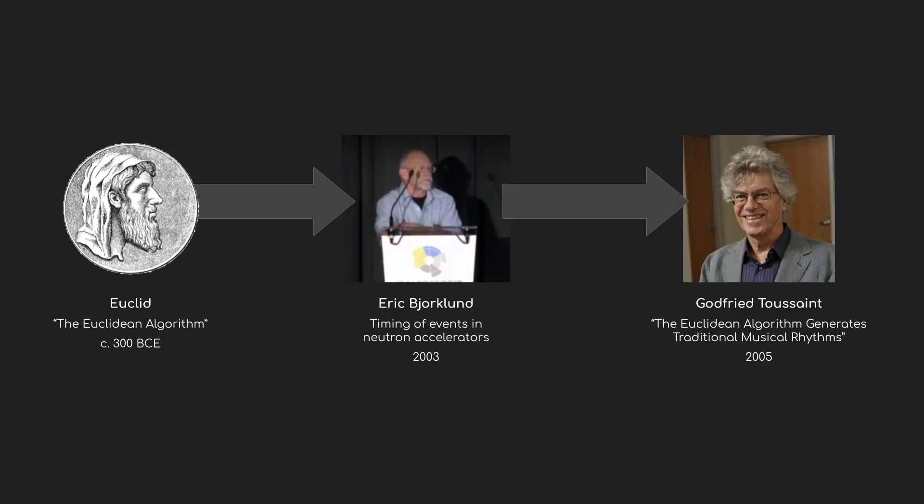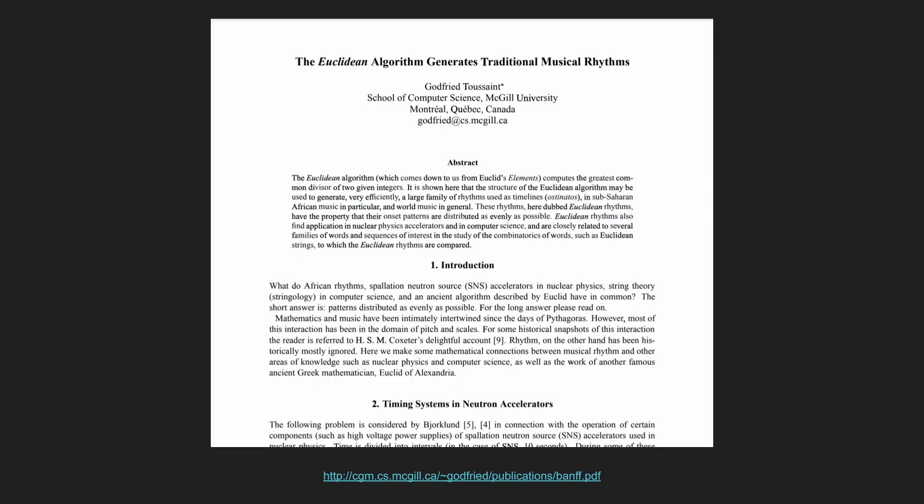So let's start with Euclid. 2,300 years ago, he developed a process or algorithm for finding the greatest common divisor of two numbers. How that algorithm works doesn't really matter for us, but we're going to talk about divisors a lot. Then there's Eric Borklund, who used that basic idea to manage the timing of events in a neutron accelerator. And then Godfrey Toussaint identified that the same patterns Borklund created appeared all over music. His paper is an interesting read, but I found that he left out some details that really bring it all home, so I'm going to restate a bunch of it here.